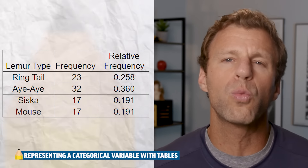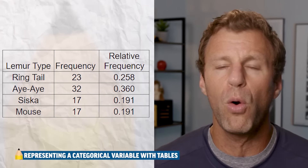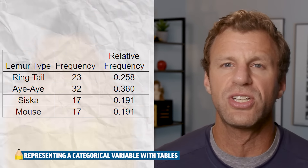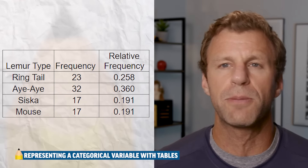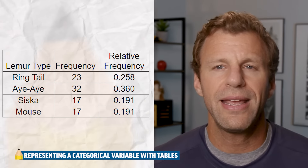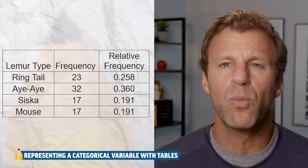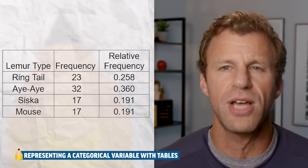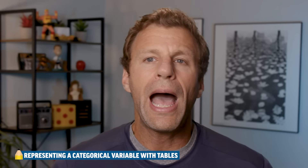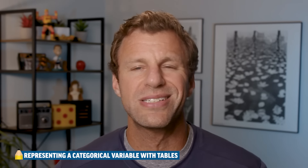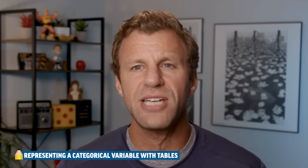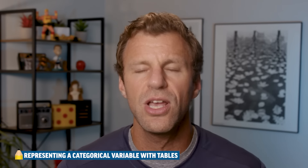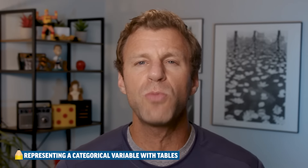We could also look at what's called the relative frequency — the proportion of lemurs that fell into each category. For example, we take the number of ringtail lemurs and divide by 89 to get the proportion. Keep in mind that a relative frequency, a percentage, or a rate all tell the exact same information that a proportion does. We really do like using proportions because when you are comparing two samples, especially two samples of different sizes, using relative frequencies is a much more fair way to compare them.